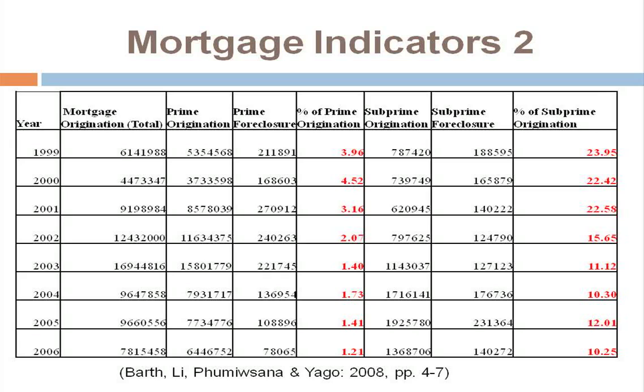We can see the amount of foreclosures. When looking at prime and subprime originations and foreclosures as a percentage of respective figures, foreclosures for subprime were stable. What this means basically is that the source of the problem was the decline in housing prices — not delinquency or foreclosure per se. It was mainly the decline in housing prices that created the problem.